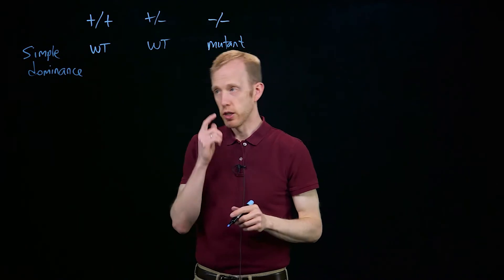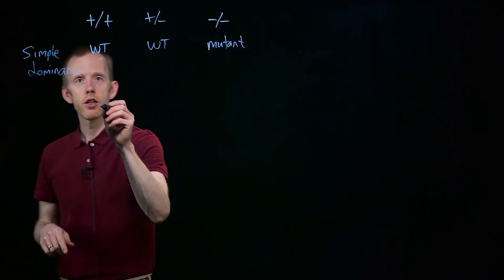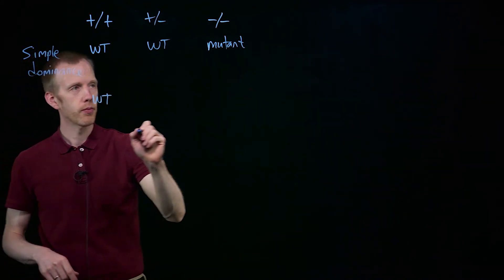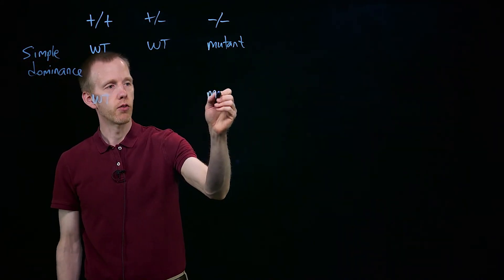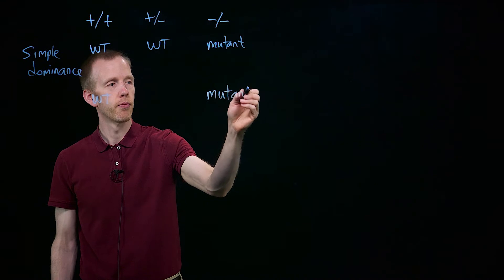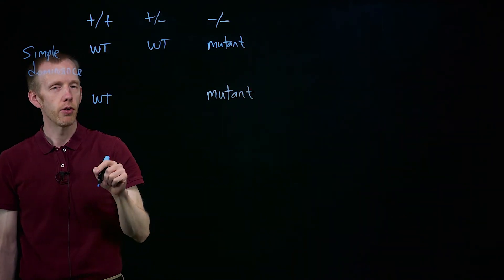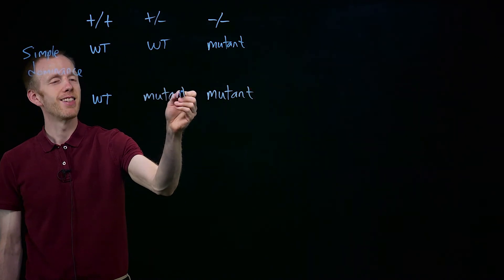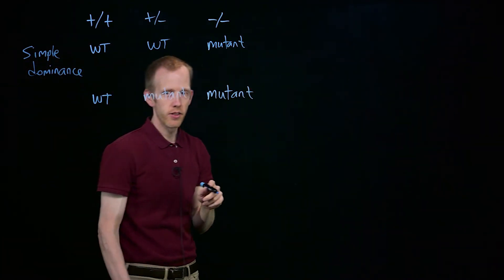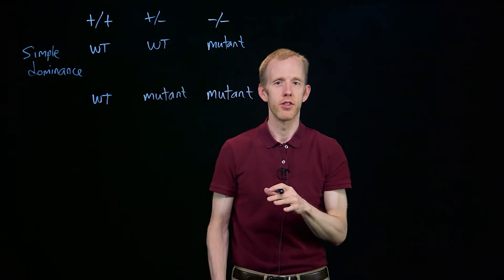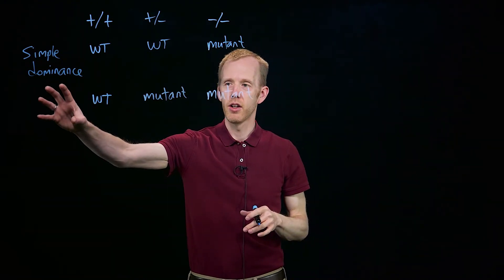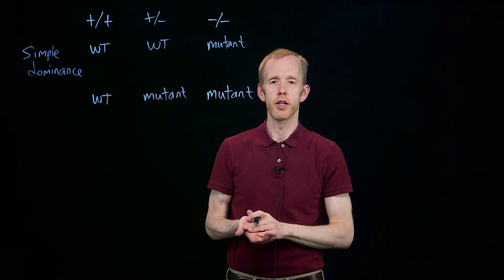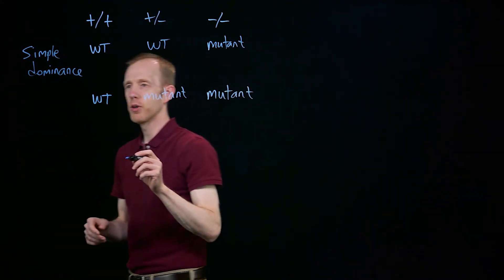Now there's another situation in which you can have a homozygote wild type, plus over plus, and you can have the minus over minus individual be mutant, and then you can also have the heterozygote show the mutant phenotype. Still, however, in the situation where plus is not simply dominant to minus, but where there's a different interaction between those two alleles, and this is called haploinsufficiency.